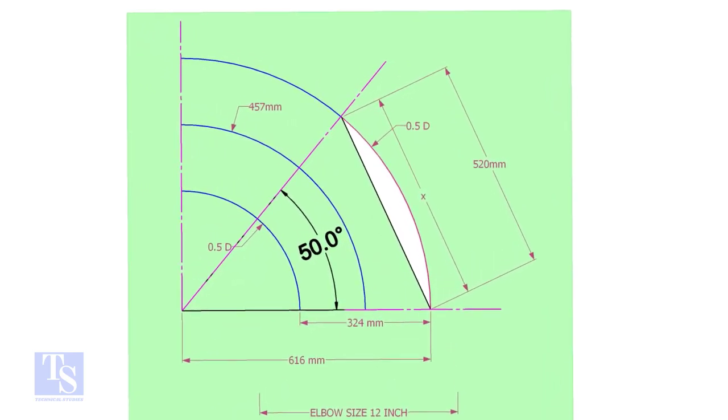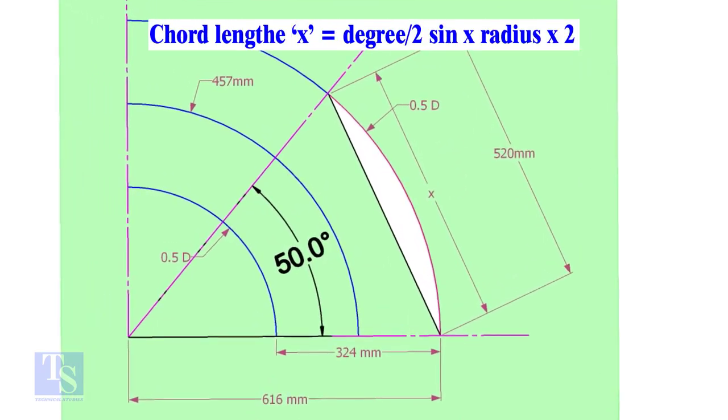Let us calculate the chord length for 50-degree of the outer arc. Chord length X equals half-degree sine multiplied by 2 radius.